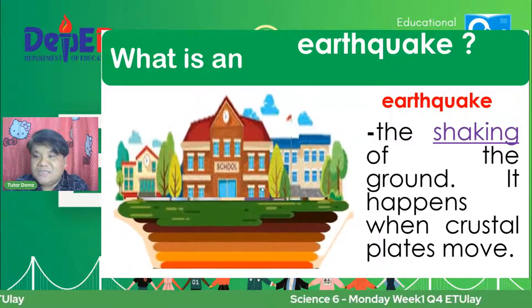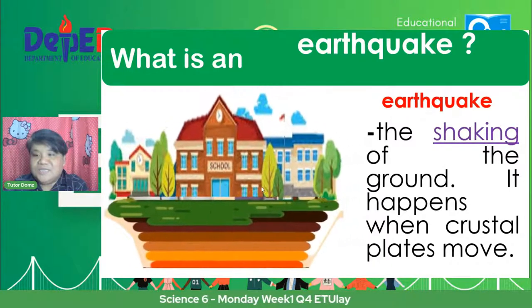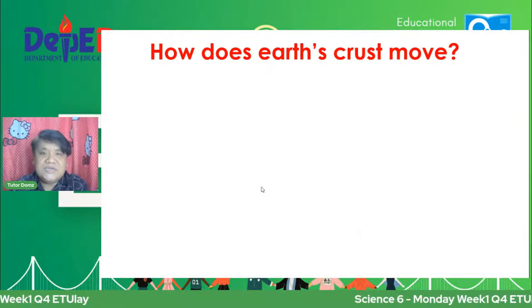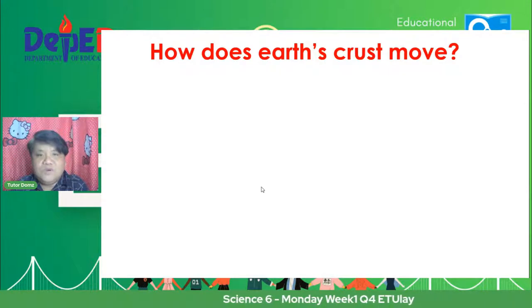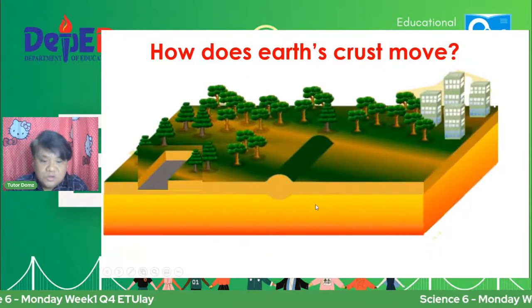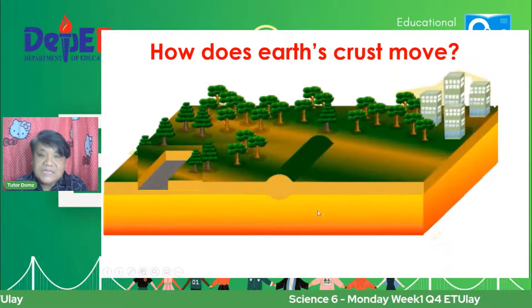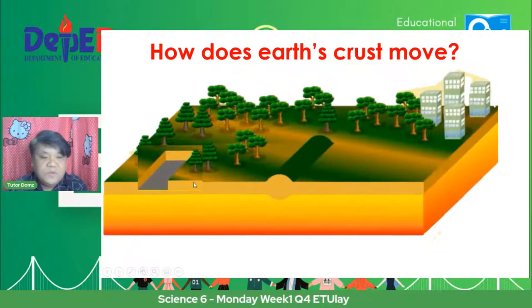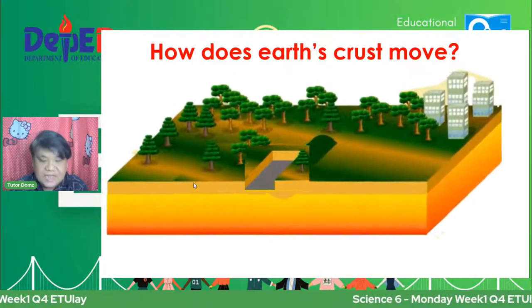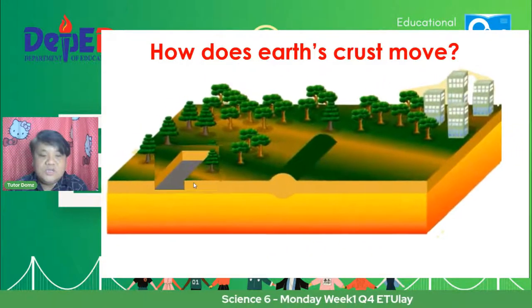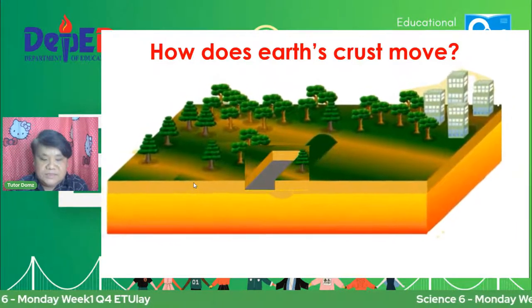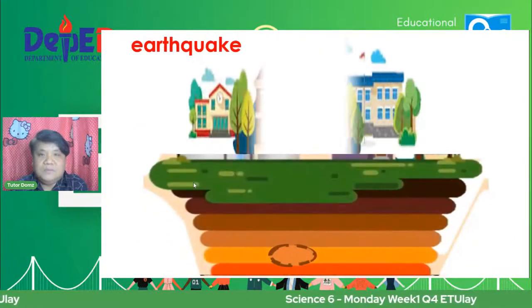So how does the Earth's crust move? Paano nga ba nagmove yung plate natin? Itong ilalim na ito, ito yung mantle, tsaka yung core. Tapos pag nagmove yung plate sa ibabaw, magkakaroon ng pagyamig. Doon ngayon nagkakaroon ng Earth's movement, yung crustal plate movement. Kapag may gumalaw na malalaking bato sa ilalim ng crustal plate, magkakaroon ng biya, mag-flow siya paakyat sa ibabaw ng mundo, and then saka nagkakaroon ng pagyanig o ng earthquake.